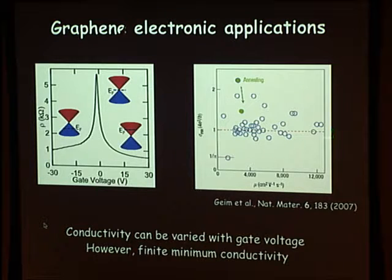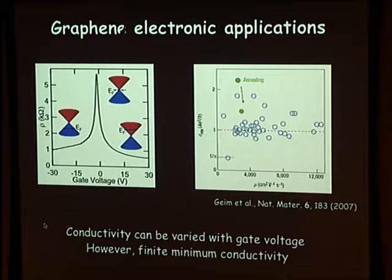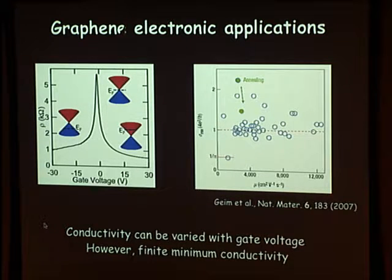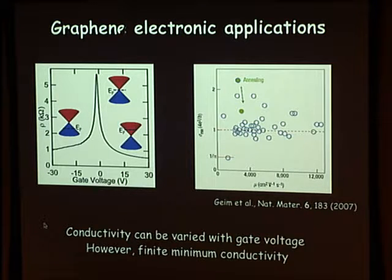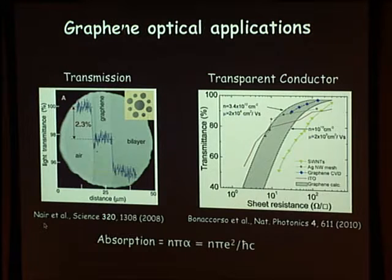For digital applications, graphene is not very good, but it has very high mobility. Older values shown here are now outdated — in the highest quality samples, you can now reach about a million in mobility, several orders of magnitude higher. So there are still promising applications in electronics, and also promising optical applications.